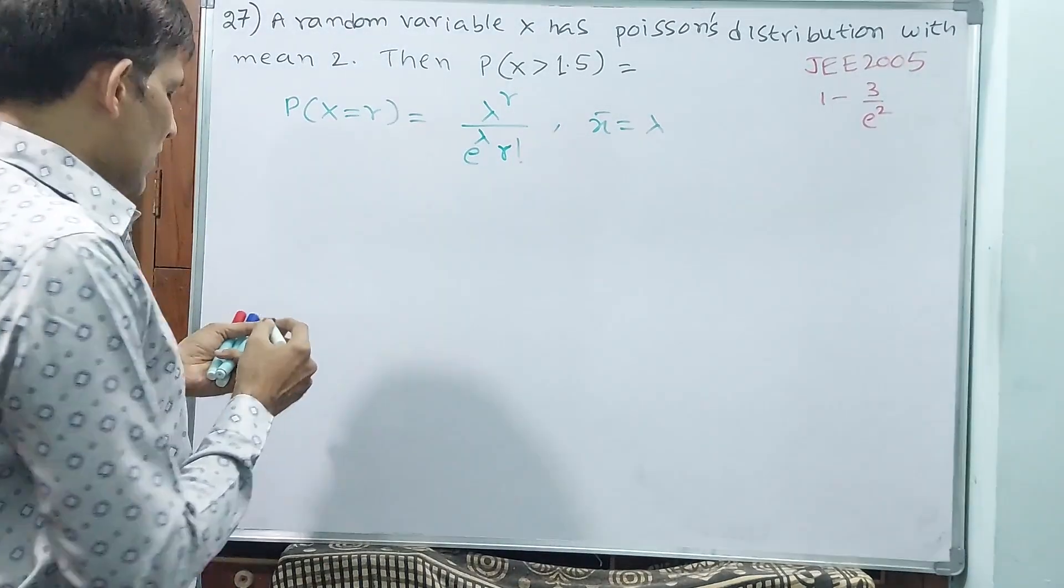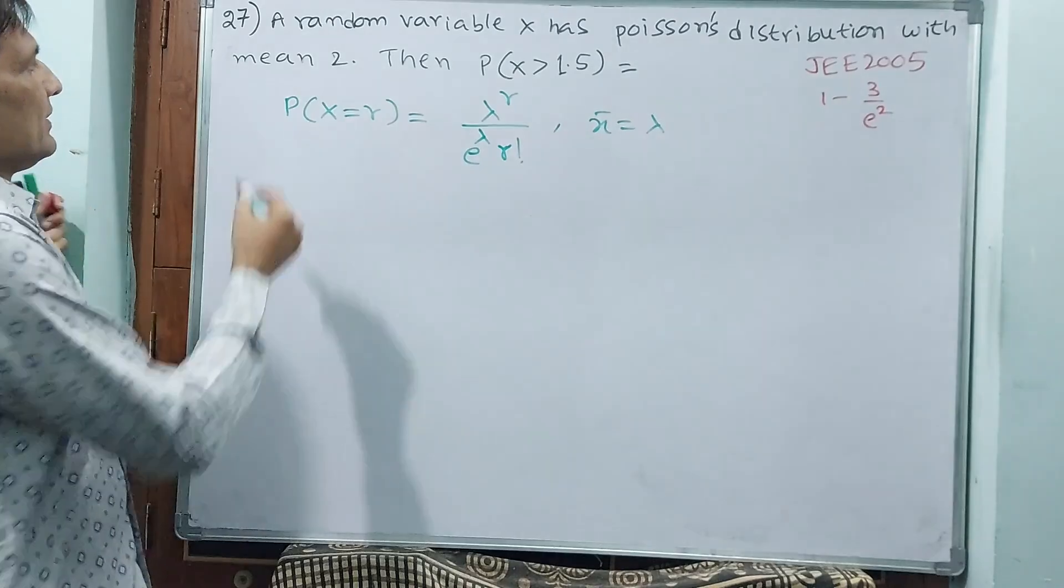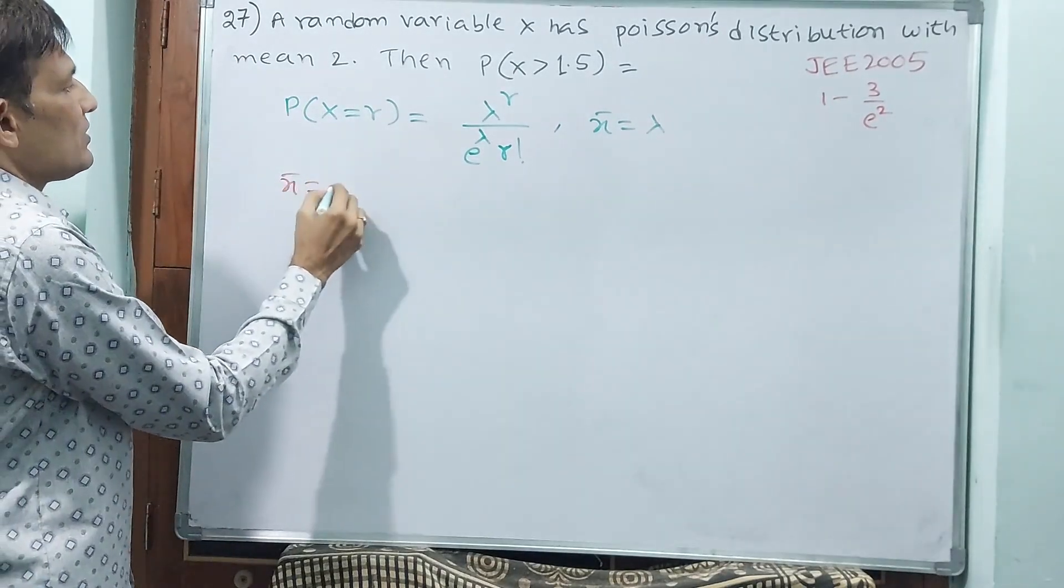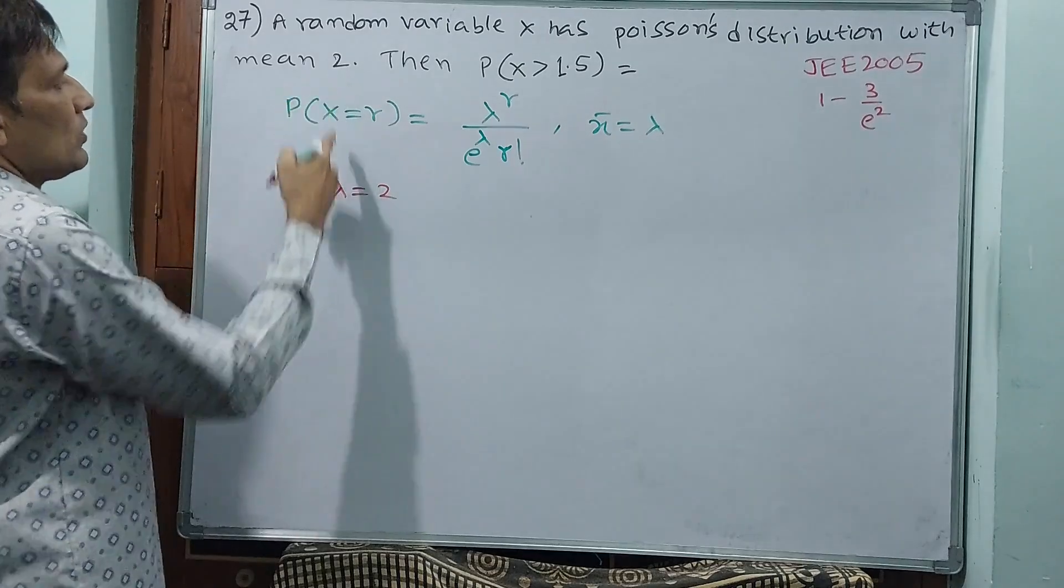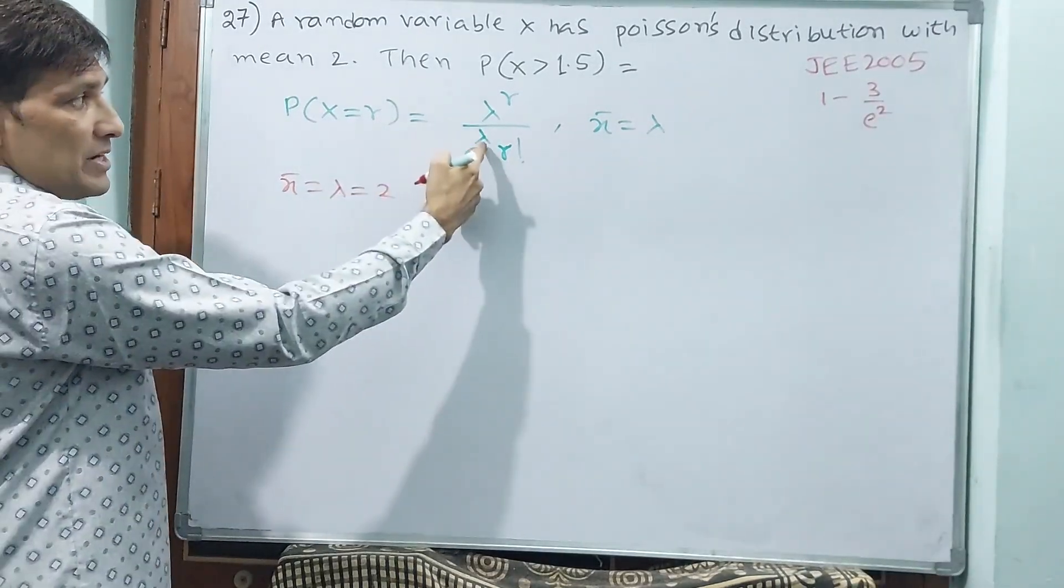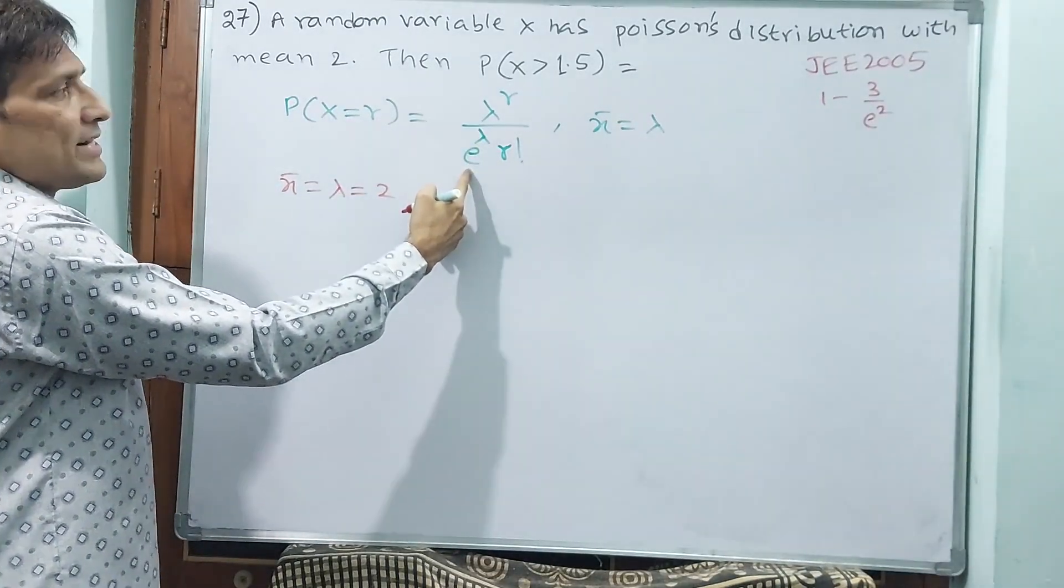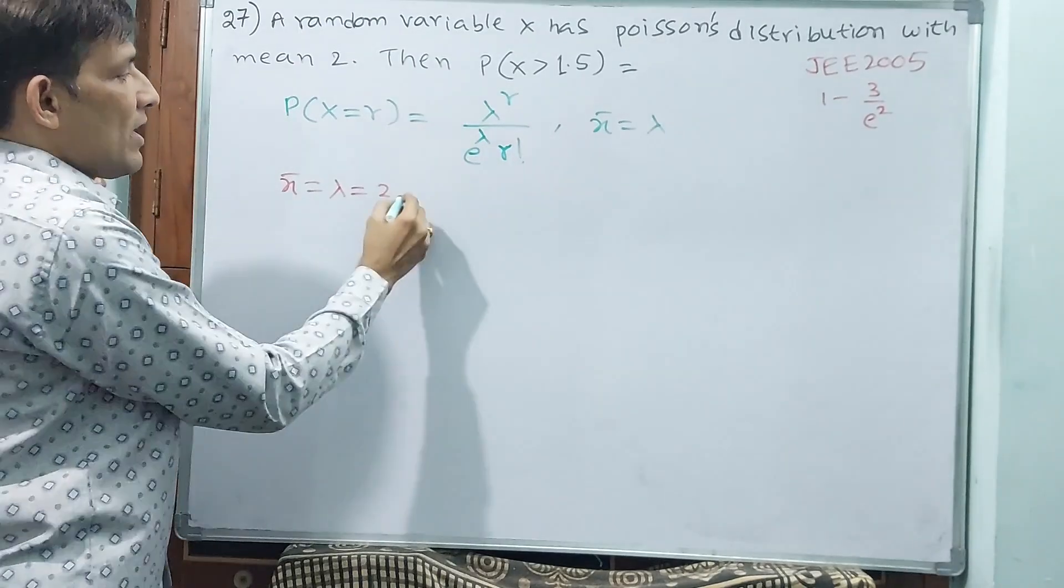Now, go back. See, x bar is equal to lambda. That means, 2. Lambda is equal to 2. That means, lambda you know, e already standard, you know. Then you have to find r. See, we are asking, probability of x is greater than 1.5.